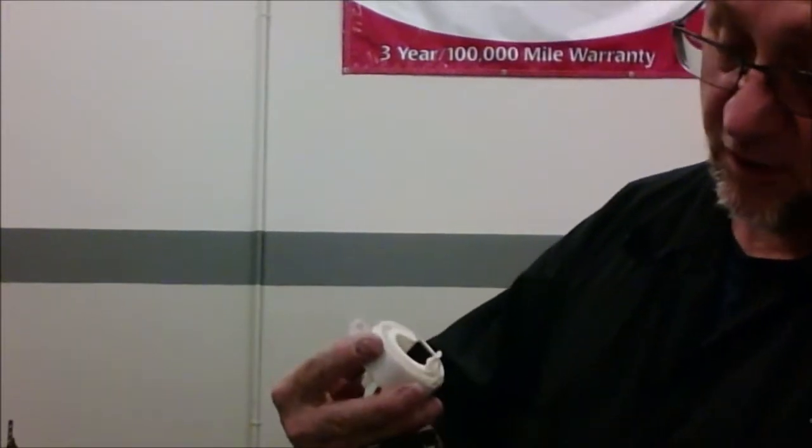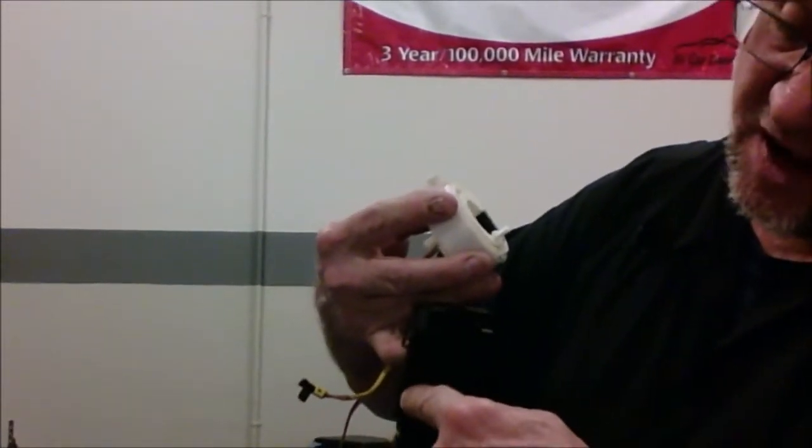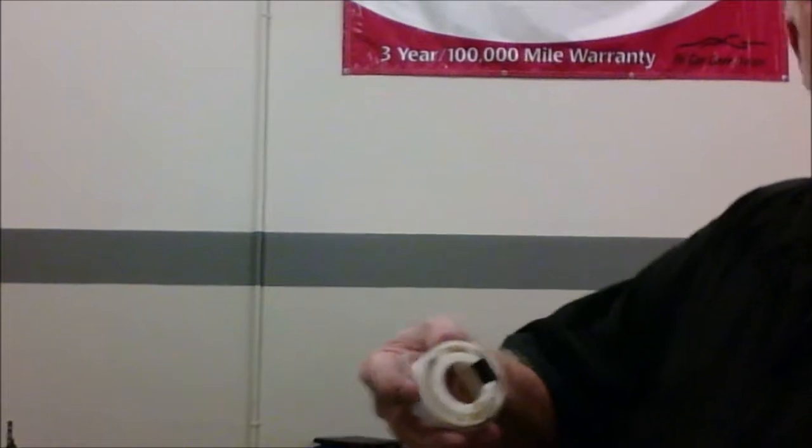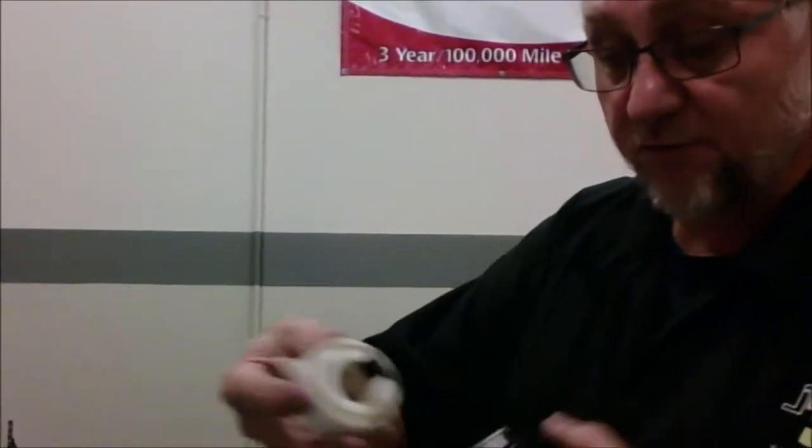Like I said, there's really no mystery behind the clock spring. It's just a ribbon tape that allows the steering wheel to turn one direction or the other without binding and maintains connectivity. Used to be a time we would have a copper disc on the bottom of the steering column that had little copper tabs that would touch three copper bands, and they are what maintained connectivity for all the electronics for cruise control and what have you.